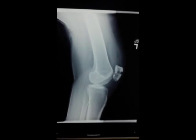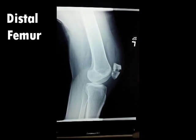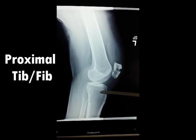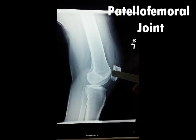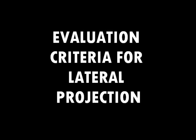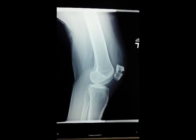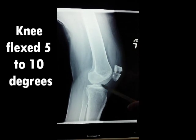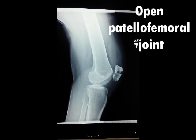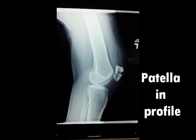Structures seen for the lateral patella would be the distal femur, proximal tib-fib, the patella, and the patellofemoral joint. Evaluation criteria for the lateral projection includes having the knee flexed 5 to 10 degrees, an open patellofemoral joint space, and the patella in profile.